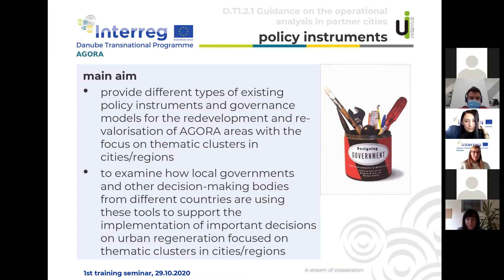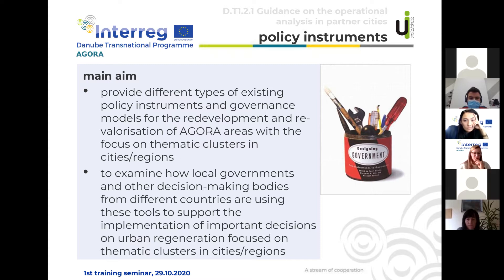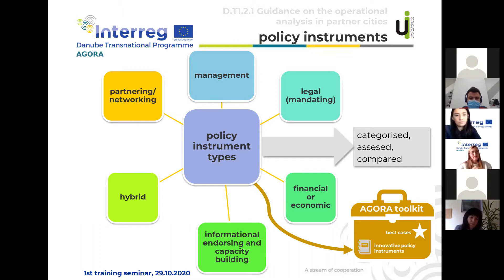Another very important chapter is devoted to policy instruments. The main aim of this chapter is to provide different types of existing policy instruments, including governance models for the redevelopment and revalorization of Agora areas. The focus is on thematic clusters in cities and regions, and to examine how local governments and other decision-making bodies from different countries are using those tools to support implementation of important decisions on urban regeneration.